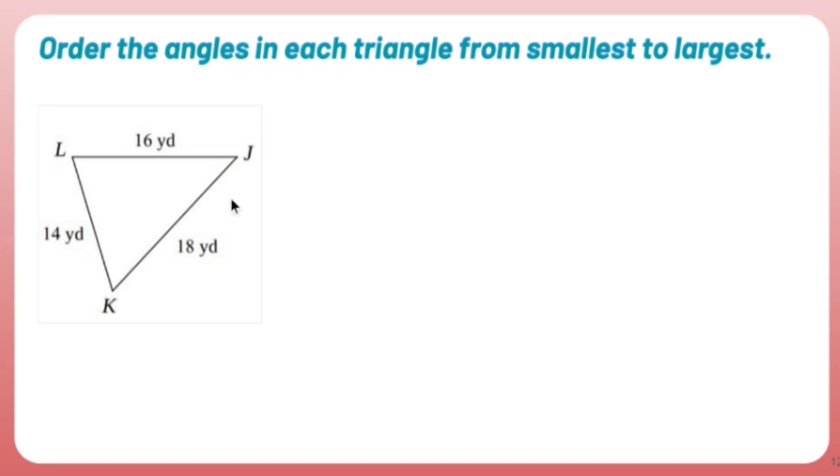LK is the smallest side, which means angle J is going to be the smallest angle because J is opposite of 14, which is the smallest side.